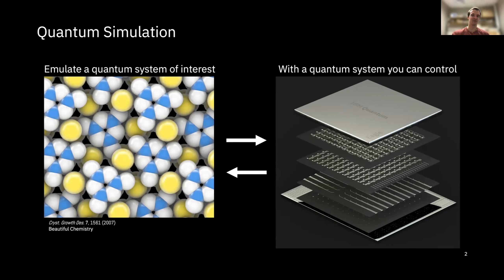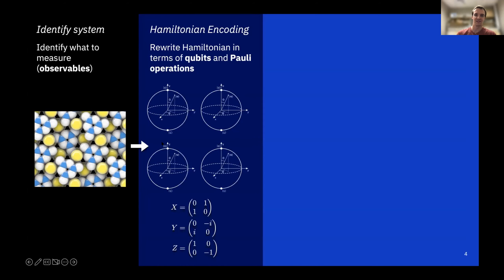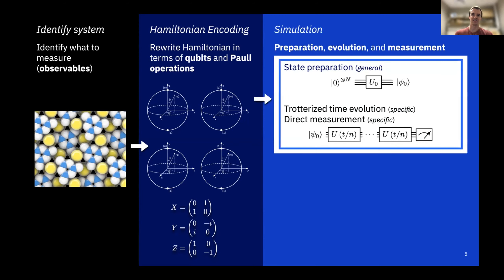I'm going to give a brief overview of what it might look like to go from start to finish in a quantum simulation, then dive into a specific example to highlight those different principles. First, we need to identify a system and decide what we actually want to measure. Once we have that, we need to translate that into the language a quantum computer can speak — in terms of qubits, like these Bloch spheres represent, and also Pauli operators such as X, Y, and Z. Once our system is encoded this way, we can execute some sort of algorithm on our quantum computer.